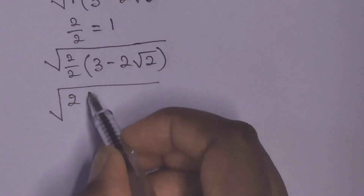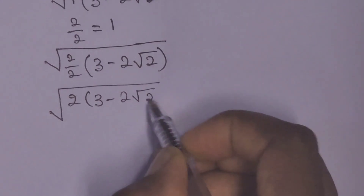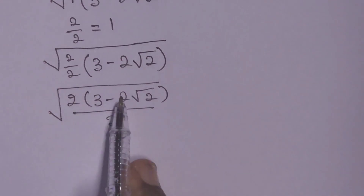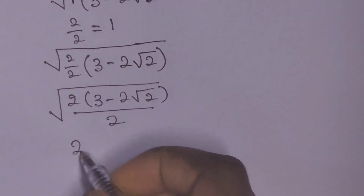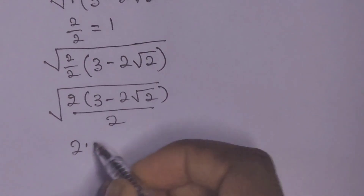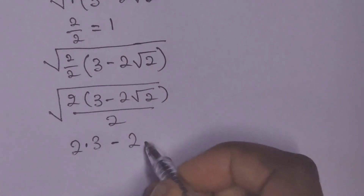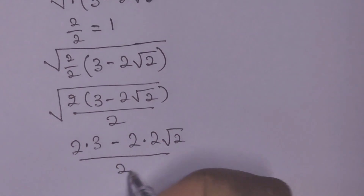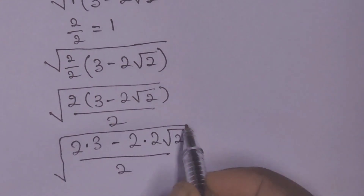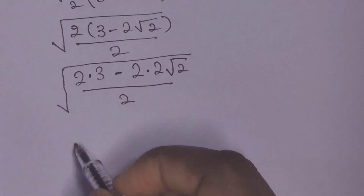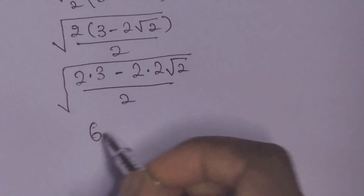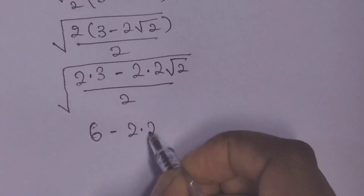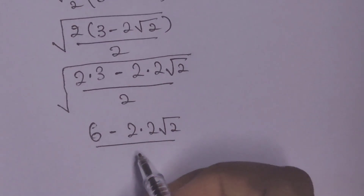From here, we have 2 times 3 minus 2 root 2, all over 2. Opening these brackets, we have 2 times 3 minus 2 times 2 root 2, all over 2. So this gives us 6 minus 2 times 2 root 2, all over 2.